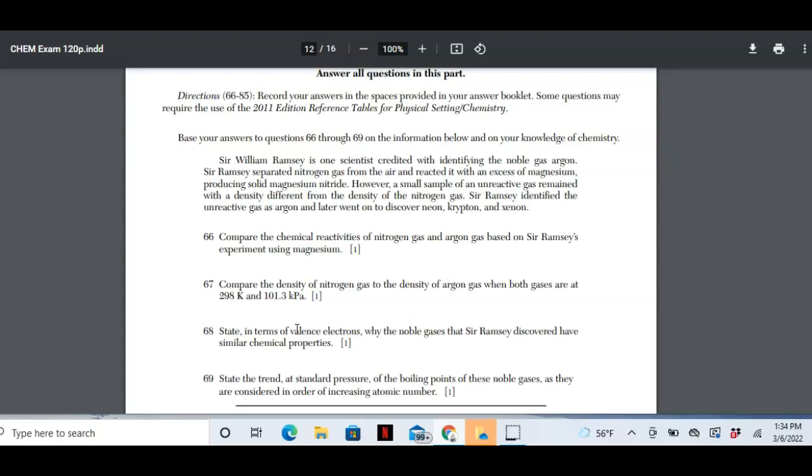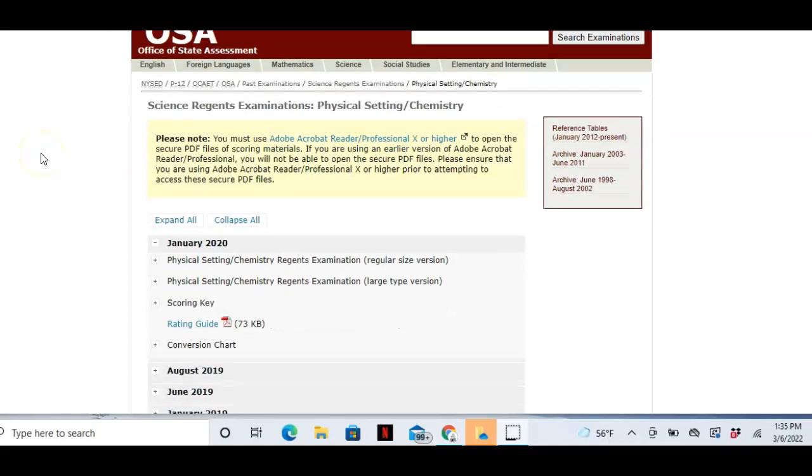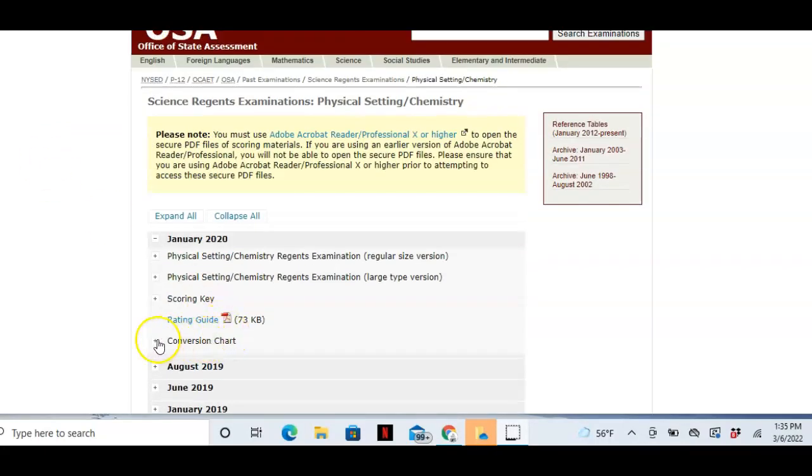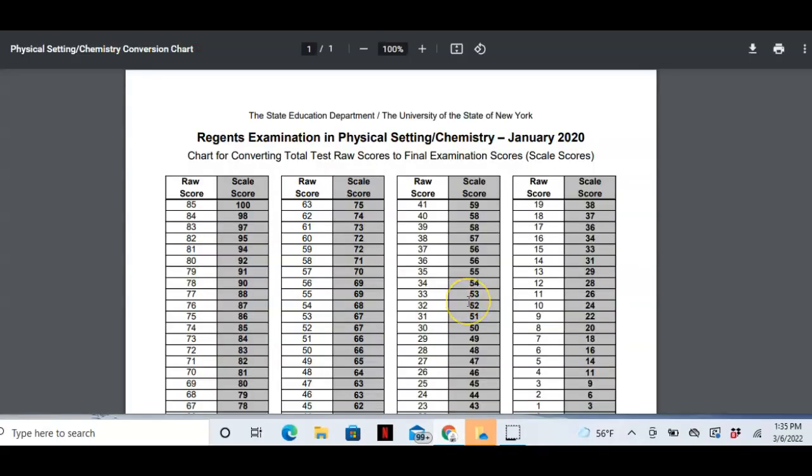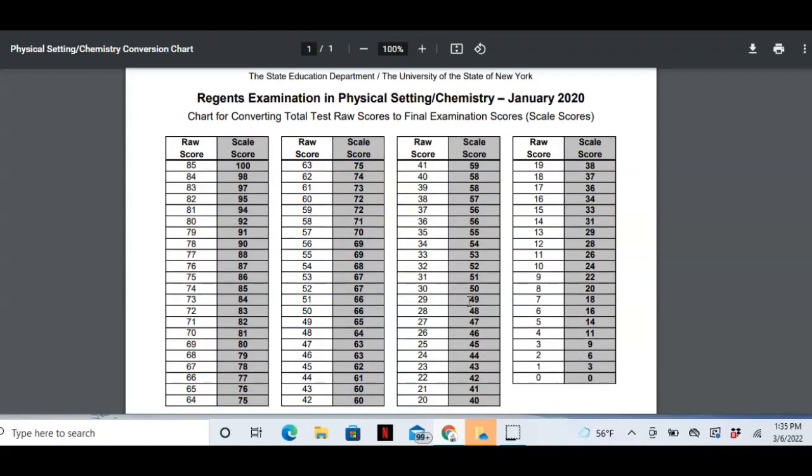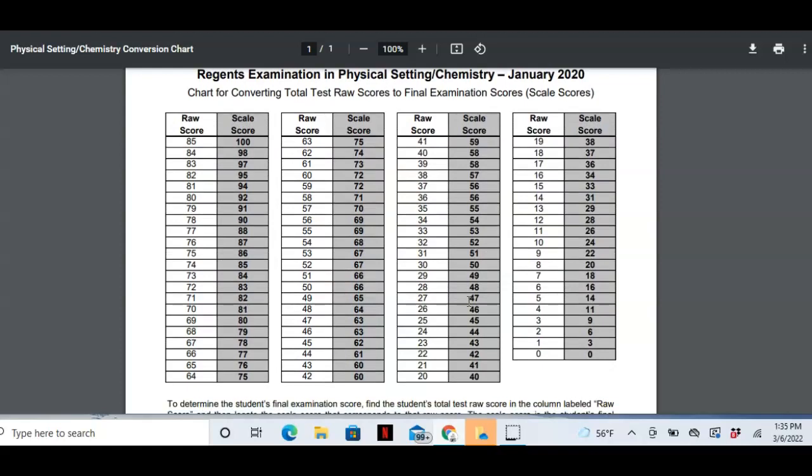The other thing I wanted to do in this video is just point out to you what the scale is going from the raw score to what you would get as a grade on the exam. Here I am back at the chemistry Regents exams and I'm going to click on conversion chart. Here is for January 2020 the conversion chart. You get a raw score. There's 85 points that you can earn and out of those 85 then depending on where you land, that raw score is turned into your scale score.